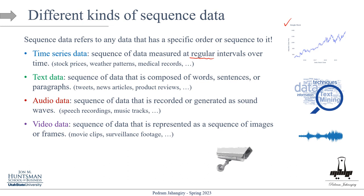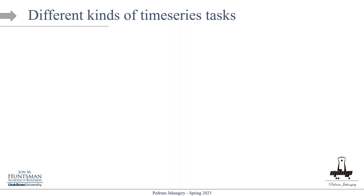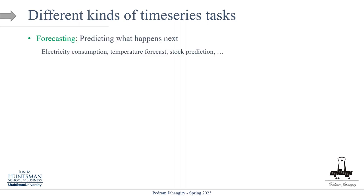For starters, we need to understand how we can handle the very basic one, which is time series. Now let's see what different tasks we can do with time series. The first one, and most obvious, is predicting — you want to forecast something, predict what happens next. More than 90% of the time when dealing with time series, you end up forecasting. For example, predicting electricity consumption, temperature forecasting, or stock price prediction.